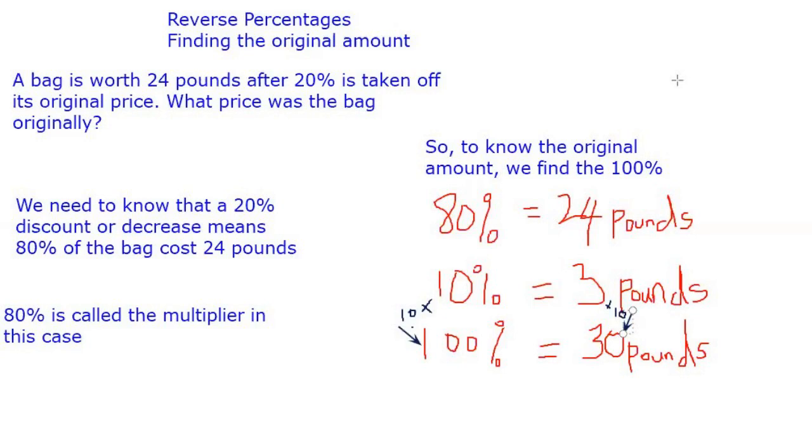To find that 100%, we've got to remember that we can actually find 10% from the 80%. And how do we find that? We can divide 80 by 8 to get 10%, and we divide 24 by 8 to get 3 pounds. So if 10% is 3 pounds, then it means your 100%, you can clearly see I've said times 10 here.